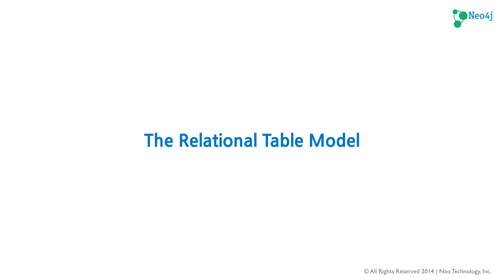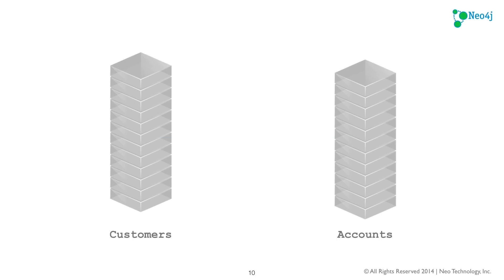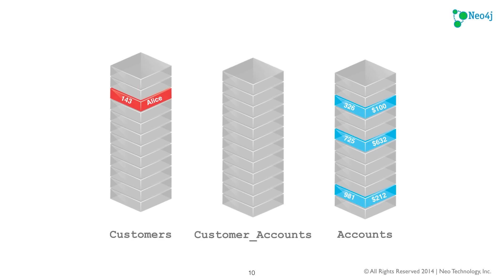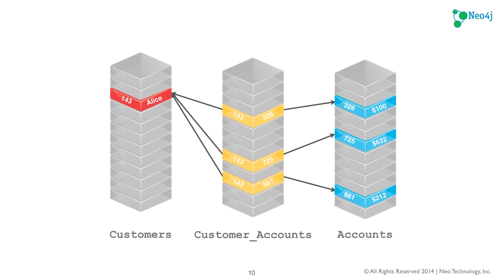How does this contrast to the relational table model? Here we have two tables, customers and accounts. We have a record, Alice 143, and Alice has three accounts. If we wanted to map Alice to her three accounts, we would need a join table called customer accounts. The difference is that in a property graph, you just have relationships stored as data, whereas in relational databases you have to infer from foreign keys and primary keys to map from customers to accounts.